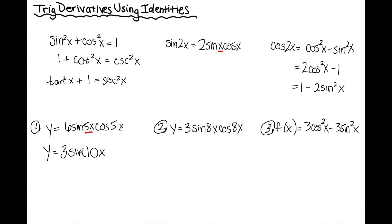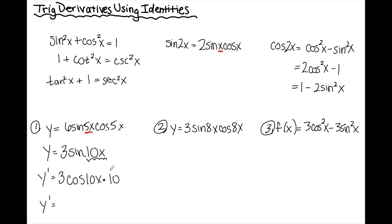Now to take the derivative of y, I just need a chain rule — I don't also need a product rule. When I find y prime, I keep the 3 and take the derivative of sine of 10x using chain rule. The derivative of sine is cosine; I leave the 10x alone and multiply by the derivative of 10x, which is 10. Doing 3 times 10 gives y prime equals 30 cosine 10x.